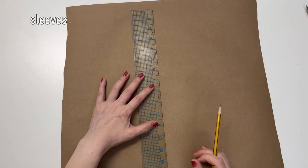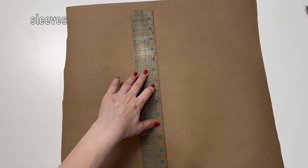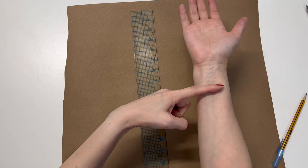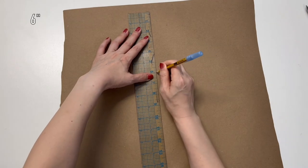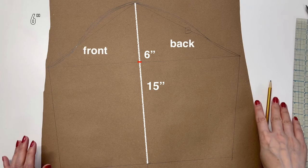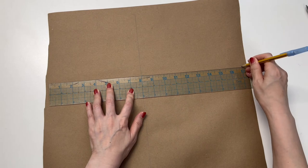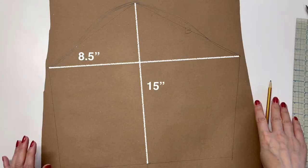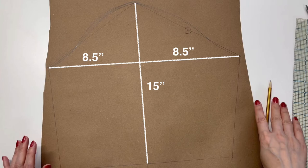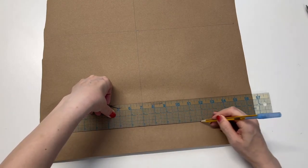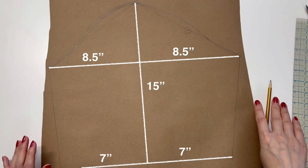Draw a 15 inches long line. Draw 15 inches long lines on both sides at 90 degrees. And draw the bottom 7 inches on each side as well. It's gonna be the sleeve end.